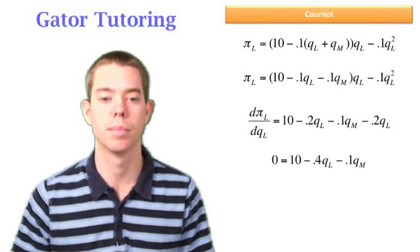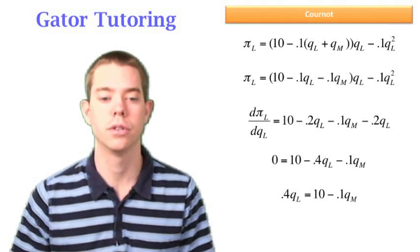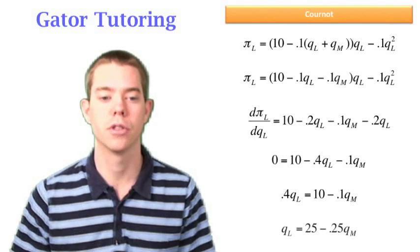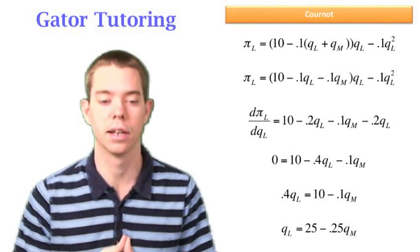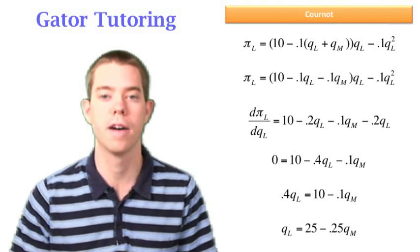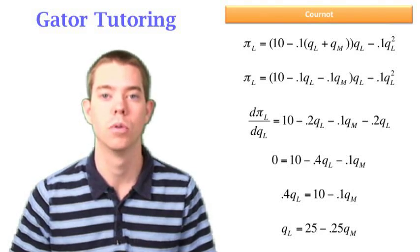And we can set that equal to zero and combine like terms. We're ready to solve for QL. So we divide through by 0.4 and we find this is Larry's reaction function. 25 minus 0.25 QM will equal QL.